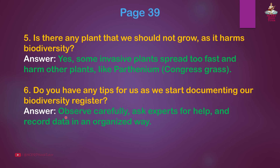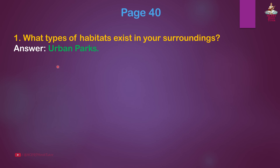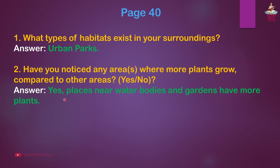Answer: Observe carefully, ask experts for help, and record data in an organized way. Page 40, Question 1: What types of habitats exist in your surroundings? Answer: Urban parks. Question 2: Have you noticed any areas where more plants grow compared to other areas? Answer: Yes, places near water bodies and gardens have more plants.